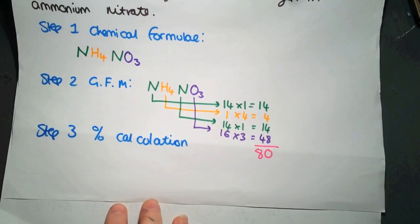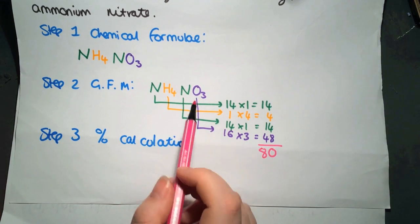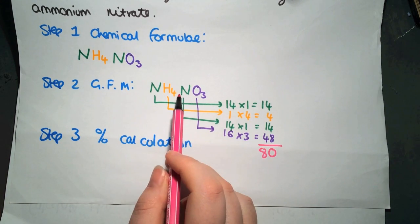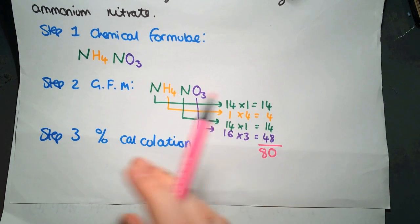Again, we're going to carry out a simple percentage calculation. This time you need to take into account the fact that we have two nitrogens present, but they haven't been written together. So you need to make sure that you're aware of that within your formula.